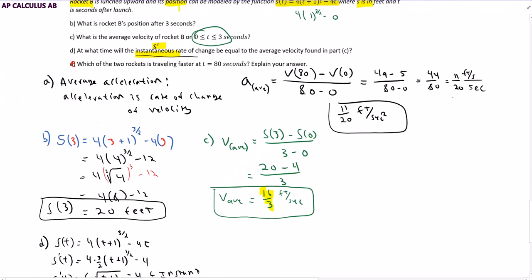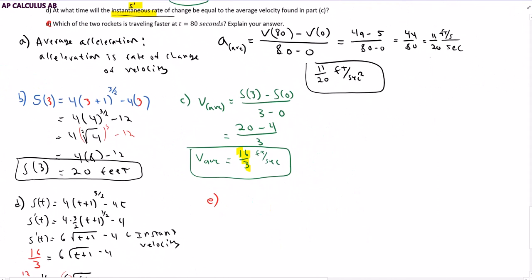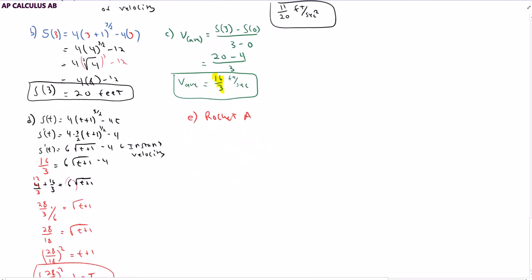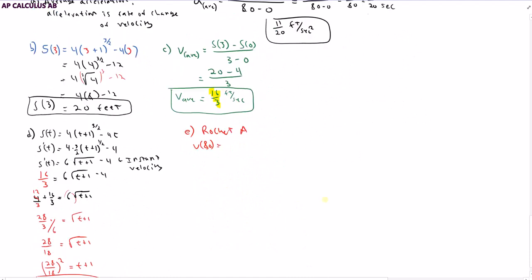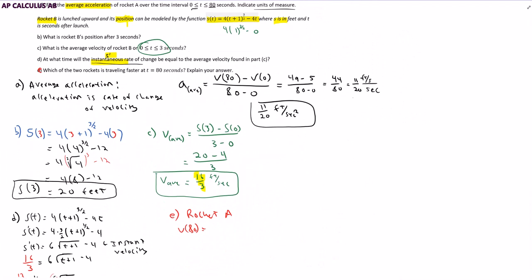Part D number 2, let's call it part E. Which of the two rockets is traveling faster at T equals 80 seconds? All right, rocket A at T equals 80 has a velocity of, how am I going to figure this out? The velocity of rocket A is determined in this table. At 80 seconds, its velocity is 49. So in this case, it's 49 feet per second. And rocket B.